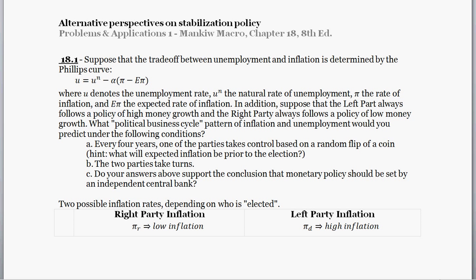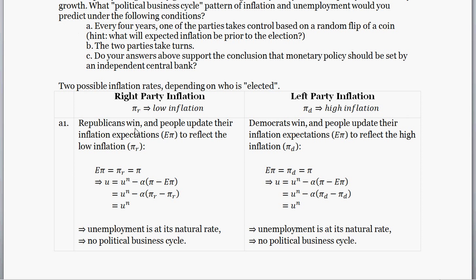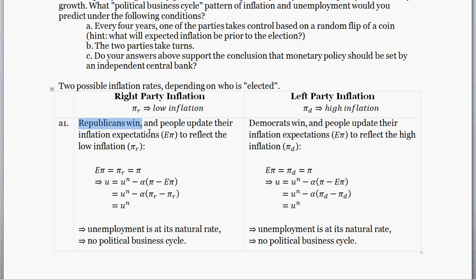The first condition is this: every four years one of the parties takes control based on a random flip of a coin, and the hint asks what will expected inflation be prior to the election. There are two possible interpretations of how this might work. The first is when people win the election, they're not put into power until a little bit after, so people get to update their expected inflation based on who they observe having won the election.